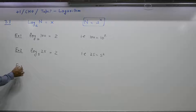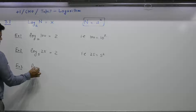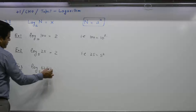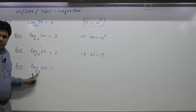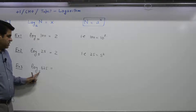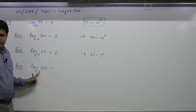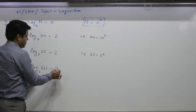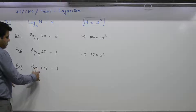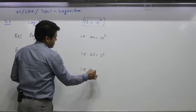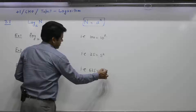Example 3: Log of 625 to the base 5. 5 to the power 1 is 5, 5 to the power 2 is 25, 5 to the power 3 is 125, 5 to the power 4 is 625. So what power of 5 gives us 625? It is 4. That is, 625 is equal to 5 to the power 4.